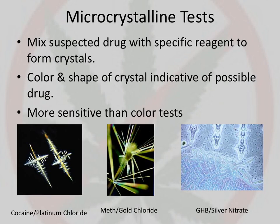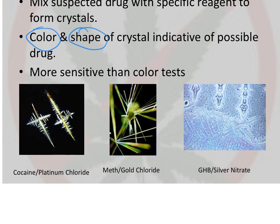The microcrystalline test is more sensitive than a color test. You add the chemical reagent directly to the suspected drug, and it will form crystals. Both the color and the shape of the crystal product is indicative of the possible type of drug. It is more sensitive than a color test, but many times you're going to want to follow this up with a confirmatory test using chromatography or spectrophotometry. Here are some examples: cocaine crystal mixed with platinum chloride, meth with gold chloride, and GHB — gamma hydroxybutyrate — commonly called Rufi, with sulfur nitrate.